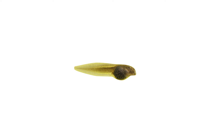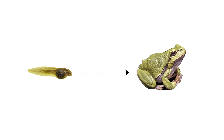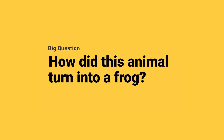What if I showed you this little animal? What do you think this animal will look like when it grows up? Don't worry if you got this one wrong — this animal looks totally different when it grows into an adult. Believe it or not, this animal changes into a frog as it grows. So how is that possible? That's our question for today: how did this animal turn into a frog?